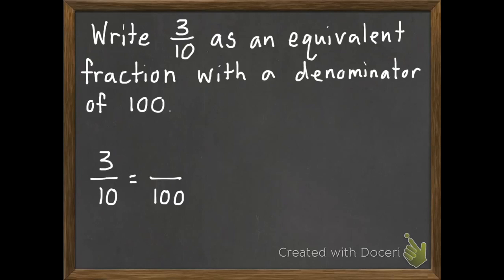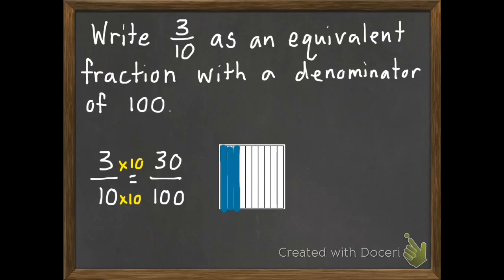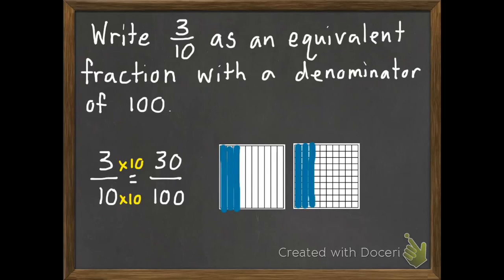Ten times what equals one hundred? Ten times ten equals one hundred. So everything in place value goes by tens. Since we multiplied the denominator by ten, we need to multiply the numerator by ten. So three times ten equals thirty. So three tenths equals thirty hundredths. And I can prove this with a picture — there's three tenths, and there's thirty hundredths, and they're both shaded the same amount.